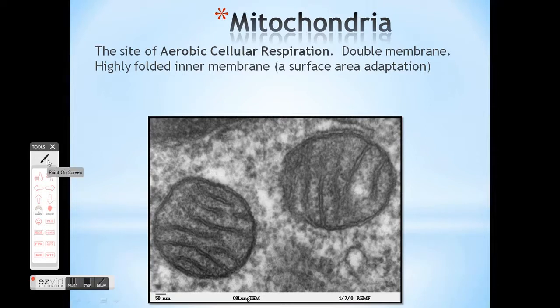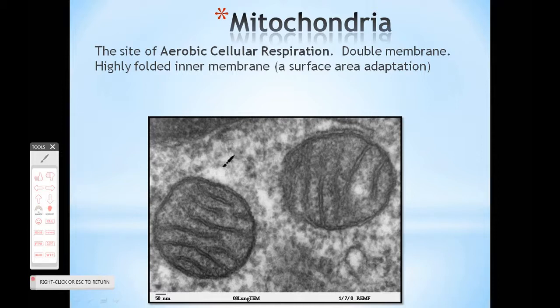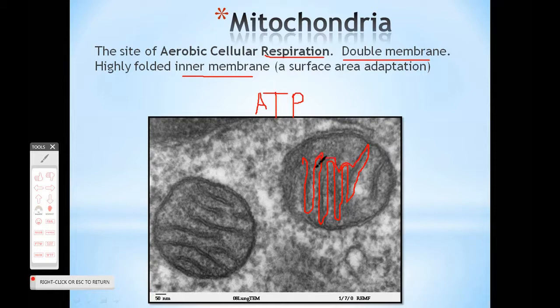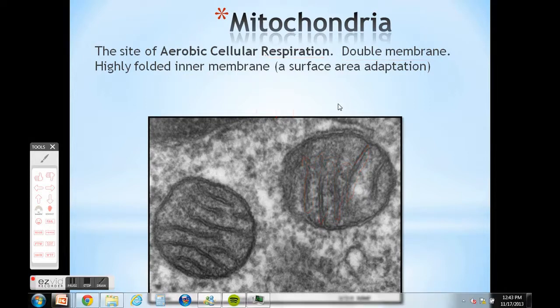The next membrane-bound organelles you should be quite familiar with already. Here's the mitochondria, where aerobic respiration takes place. You're turning sugar into ATP, or adenosine triphosphate. It has a highly folded inner membrane - it is double membrane with two membranes folded up inside. Why is the inner membrane all folded up? It's to increase surface area. By increasing surface area, the faster and more ATP it can output. The more surface area it has, the more ATP it can make. We'll talk about that in another unit.